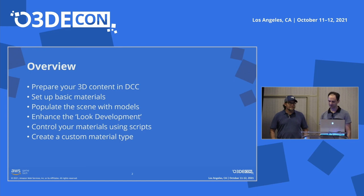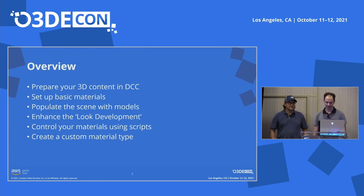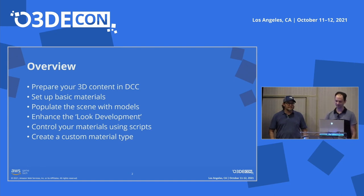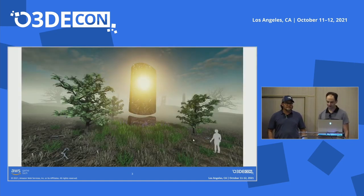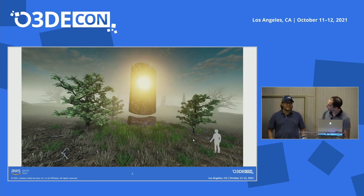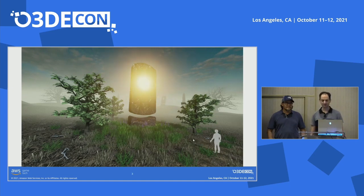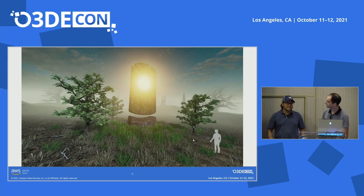Starting in a digital content creation tool or DCC, we'll set up a small scene with some basic models, some materials and lighting, add a script to drive some material changes dynamically, and we'll create a custom material type with vertex animation. This is the final scene that we're working towards. It has image-based lighting, area lights, a model with multiple materials, a script that makes the orb in the center oscillate, and a custom material type making the grass look like it's blowing in the wind.